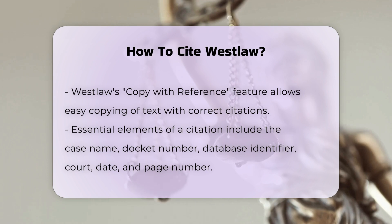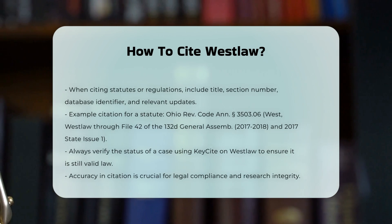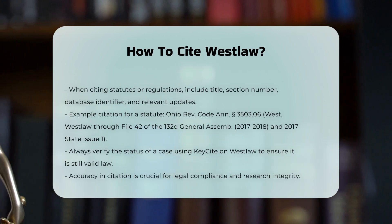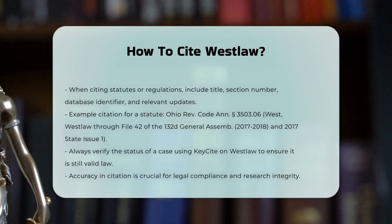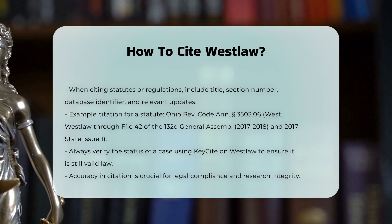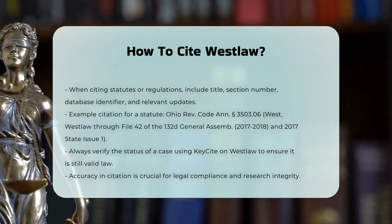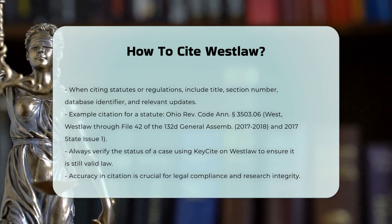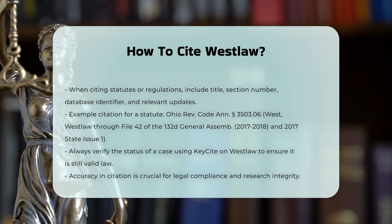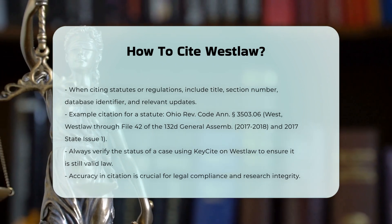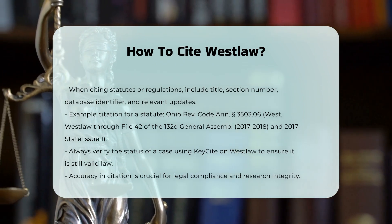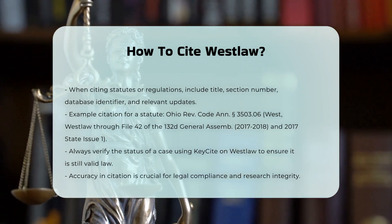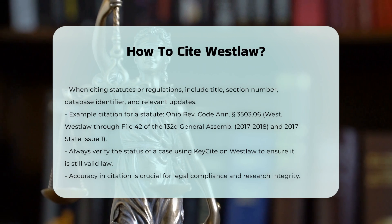Citing Statutes and Regulations. When citing statutes or regulations found on Westlaw, you must include the title, section number, and the database identifier along with any relevant updates or amendments. For example: Ohio Rev. Code Ann. § 3503.06 (West, Westlaw through File 42 of the 132nd General Assembly, 2017-18, and 2017 State Issue 1).